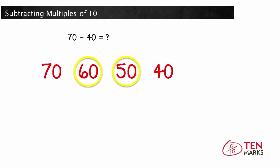1, 2, 3. You counted back 10 three times, and 3 tens is 30. 70 take away 40 equals 30.